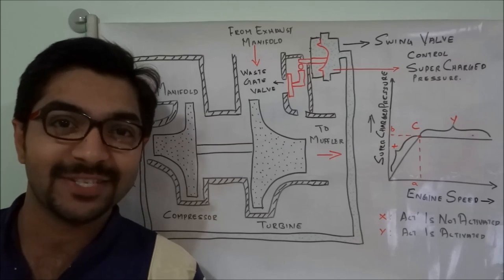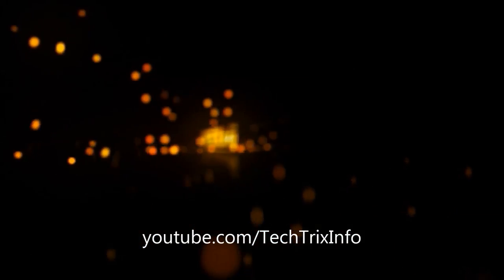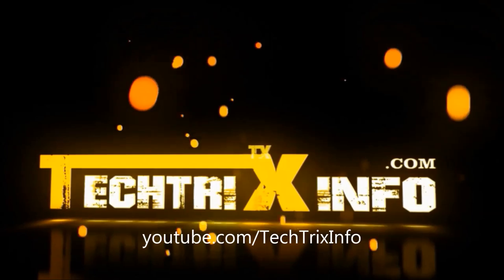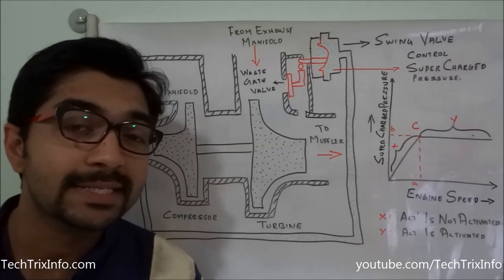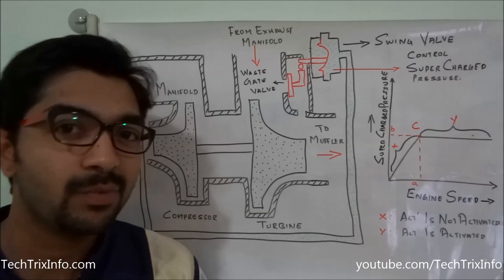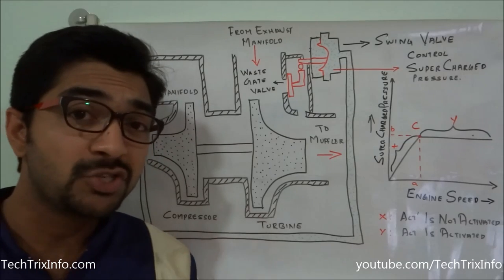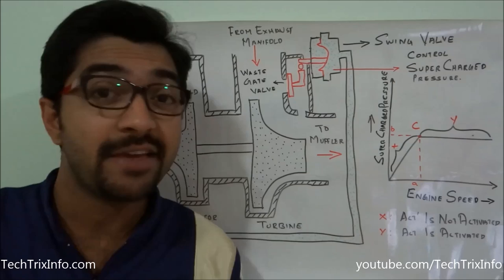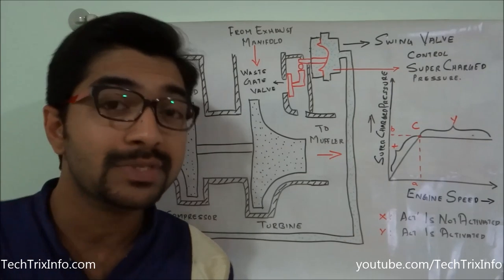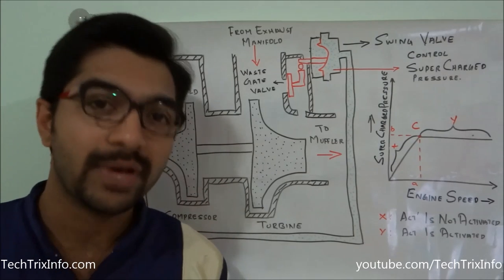Hi guys, welcome back to TechRicks Info. Today let's learn how a wastegate turbocharger exactly works with the help of this diagram. As you all know, a turbocharger is used to increase the power output, increase the efficiency, and also reduce the emission level of a diesel engine compared to a naturally aspirated engine.